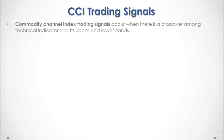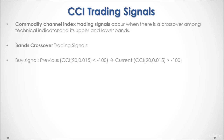Commodity channel index trading signals occur when there is a crossover among the technical indicator and its upper and lower bands. Therefore we have a bands crossover type of trading signal, in which we have a buy signal if the previous commodity channel index was less than minus 100 and the current commodity channel index was above minus 100.